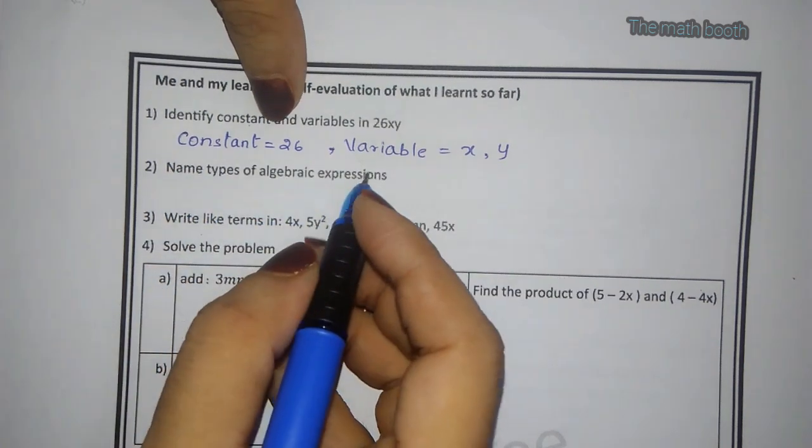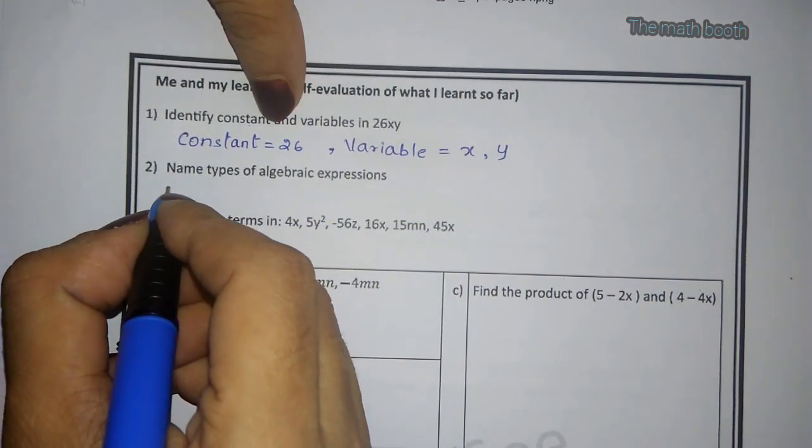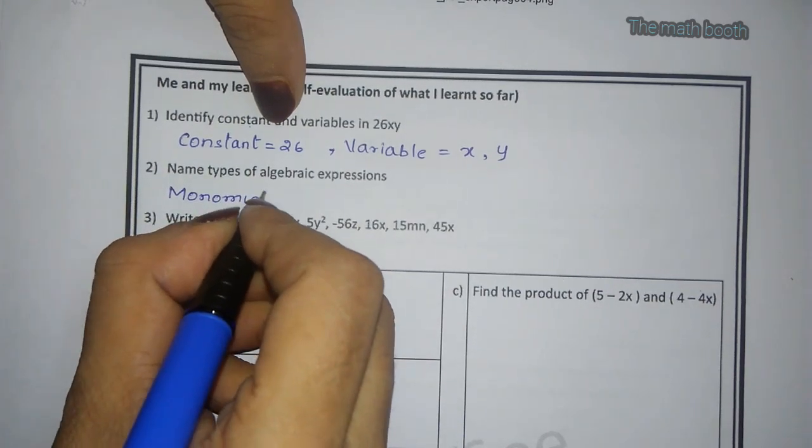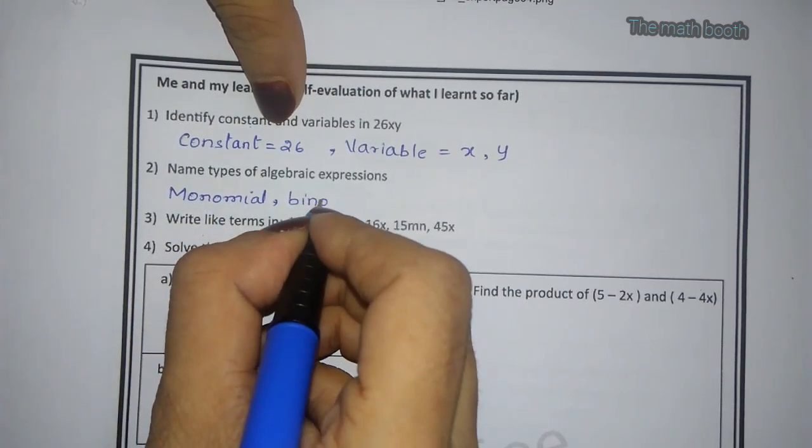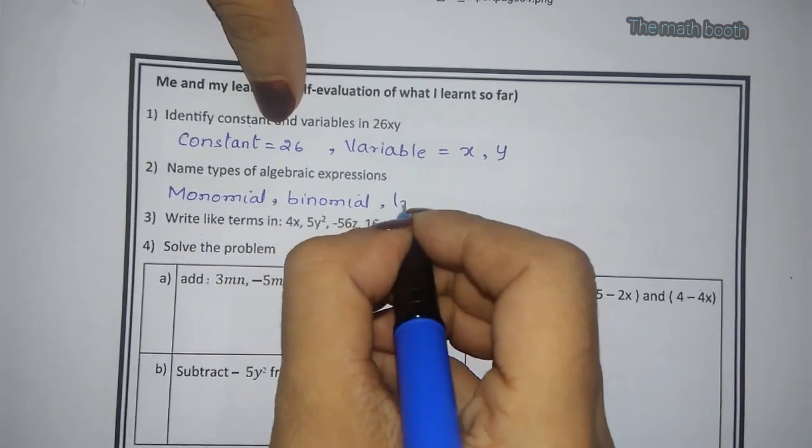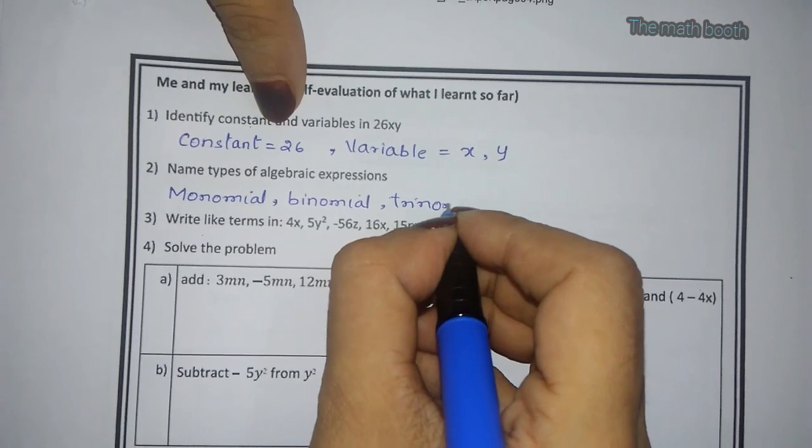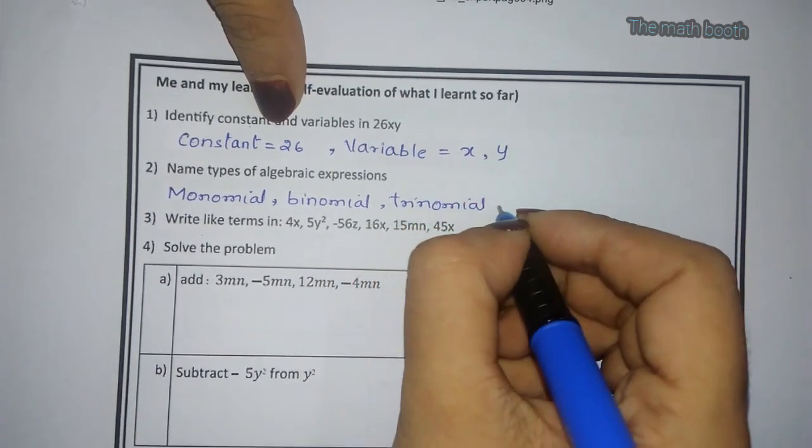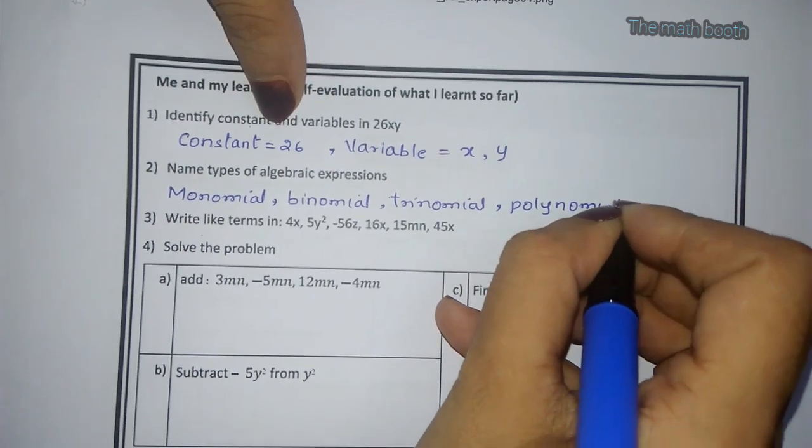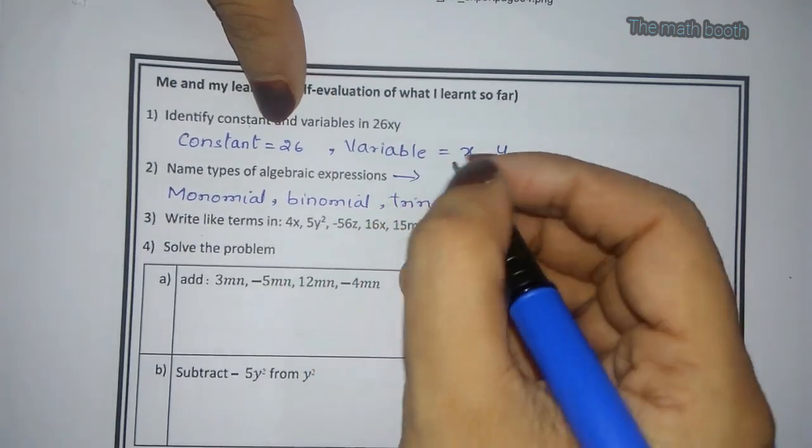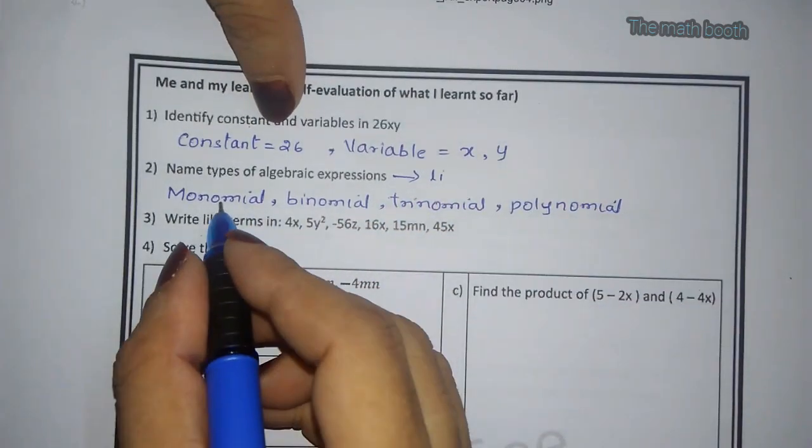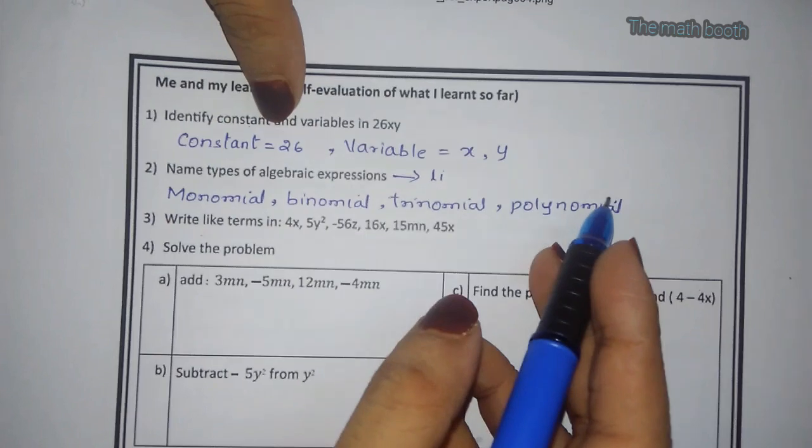Name types of algebraic expression. Monomial, binomial, trinomial, and polynomial. Or we can also write types of algebraic expression like terms. Expression is monomial, binomial, trinomial, and polynomial.